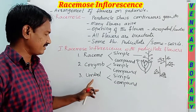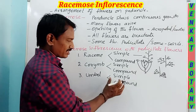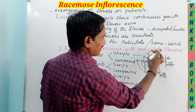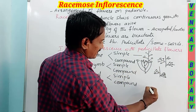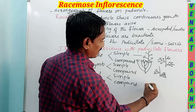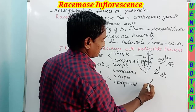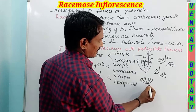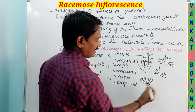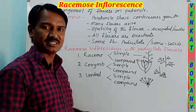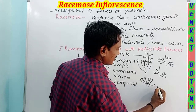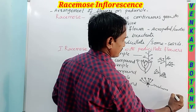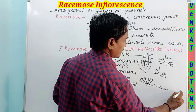In umbel type, the peduncle is condensed. All flowers arise from a common point on the peduncle. All flowers are bracteate and pedicellate. The bracts of all flowers fuse to form a thin layer called the involucre of bracts. In compound umbel, the peduncle is branched and each branch resembles a simple umbel.